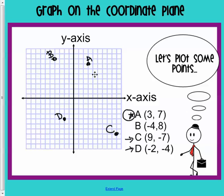So, what do we notice about A? A is in the first quadrant. That's what we call it, quadrant 1.